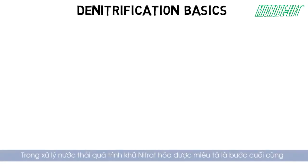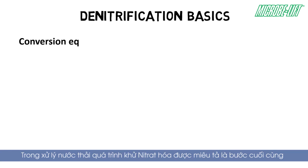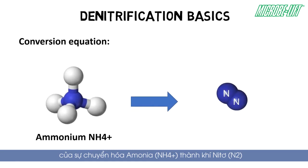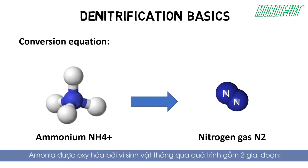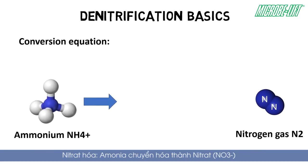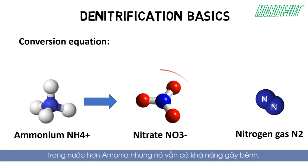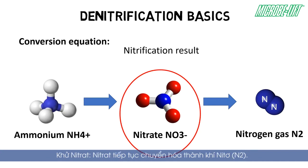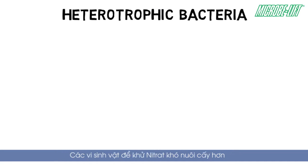In wastewater treatment, denitrification describes the final step of the conversion from ammonium (NH4+) to nitrogen gas (N2). After ammonium is oxidized by microorganisms in a two-step process, ammonium is first converted to nitrate (NO3-). Nitrate is still present in the wastewater and, although less harmful than ammonia, it can still cause diseases.